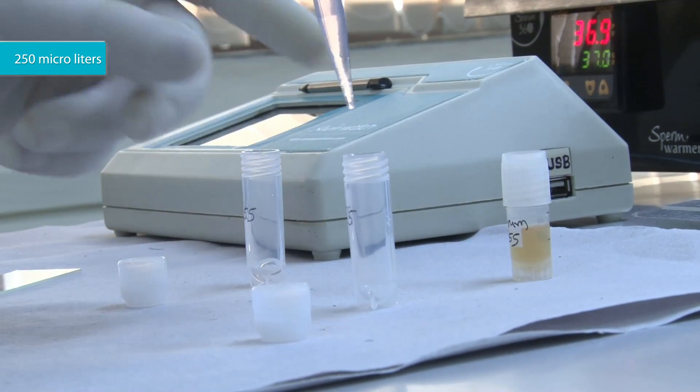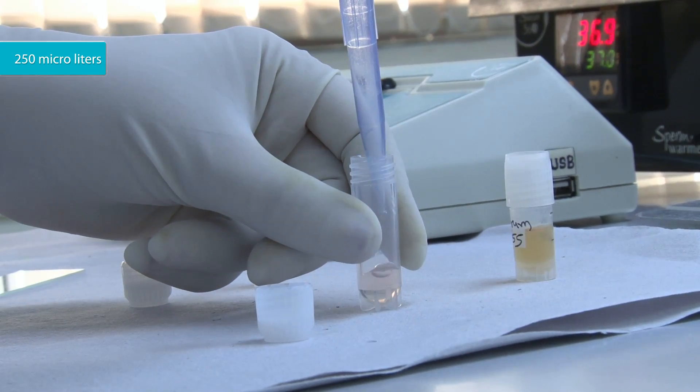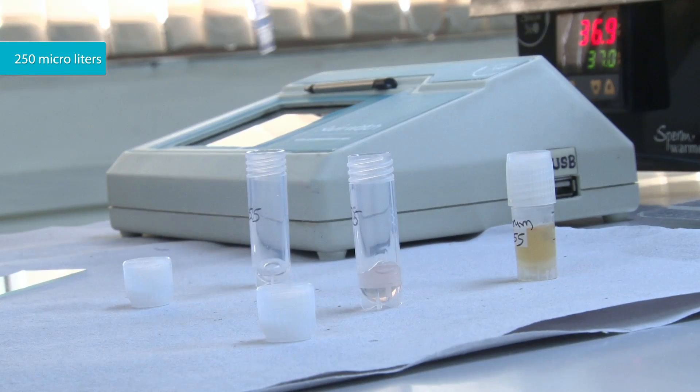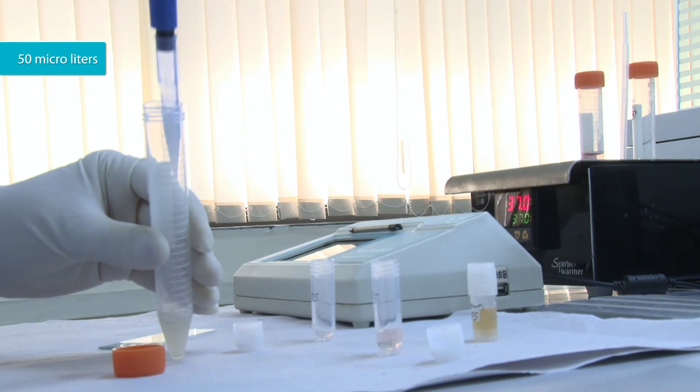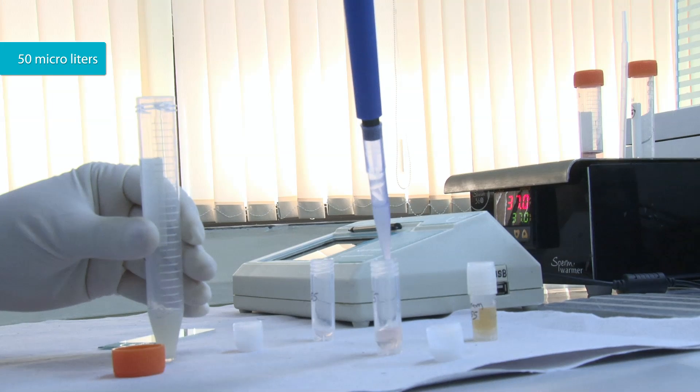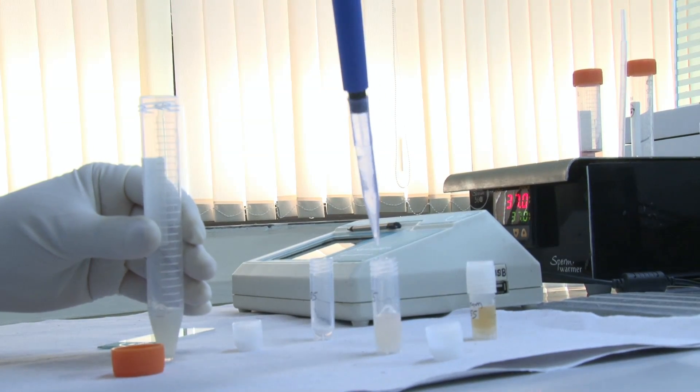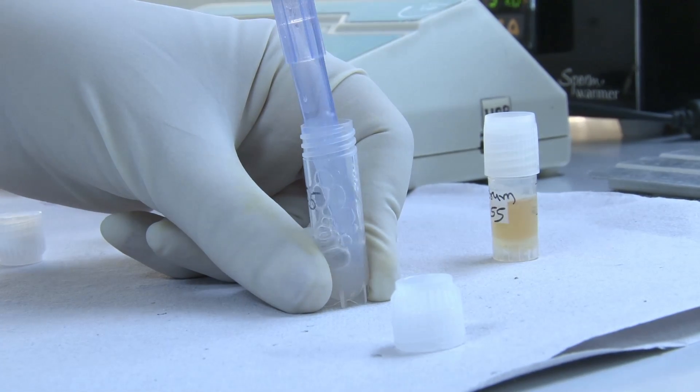Put 250 microliters of diluted serum in the tube. Add 50 microliters of donor semen to this tube. Mix well.